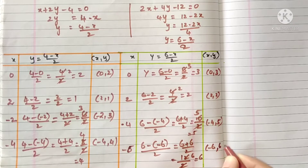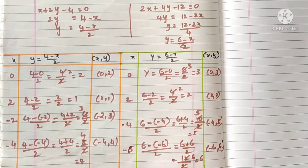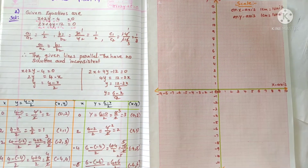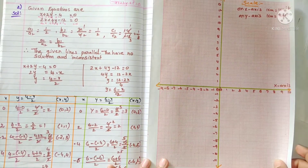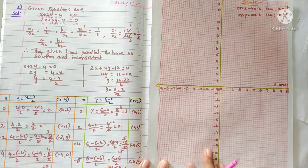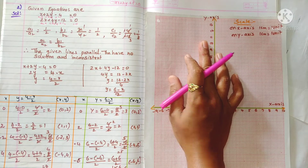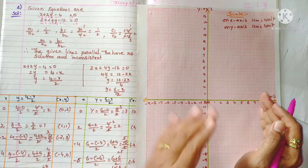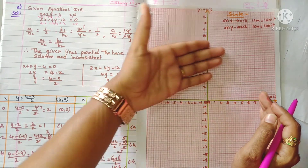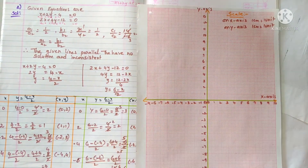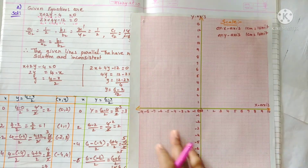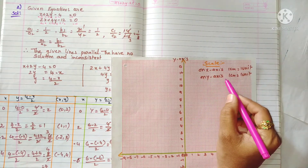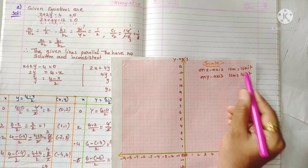Now we will represent these points on the graph. Take graph paper and name the horizontal line as x-axis, vertical line as y-axis, and their intersection as origin (0, 0). Right side positive, left side negative, above origin is positive, below is negative. Scale: one centimeter equals one unit on both x and y axes.